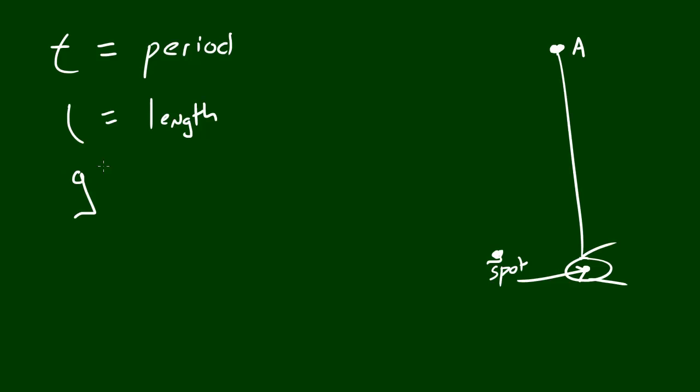And last but not least, you got G. And G, of course, symbolizes the gravity. So T is the period or length of time it takes for the pendulum to complete one swing back and forth. L is the length of the pendulum from A to the G spot. And G is the gravity. So I probably shouldn't have named that G spot. May confuse you guys.